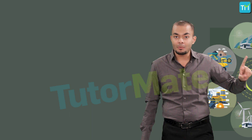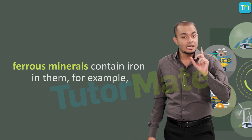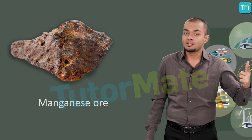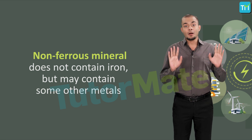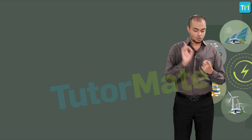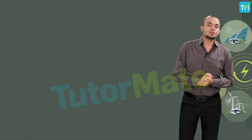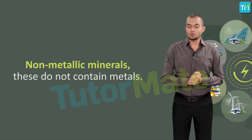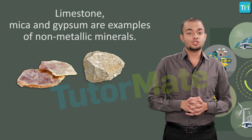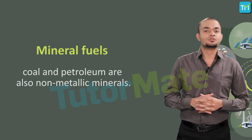Metallic minerals may be ferrous or non-ferrous. Ferrous minerals contain iron in them — for example, iron ore, manganese, and chromites. On the other hand, non-ferrous minerals do not contain iron but might contain other metals such as gold, silver, copper, or lead. Moving on to another major class — non-metallic minerals. These do not contain metals at all. Limestone, mica, and gypsum are examples of non-metallic minerals. Mineral fuels like coal and petroleum are also non-metallic minerals.